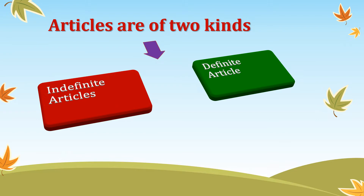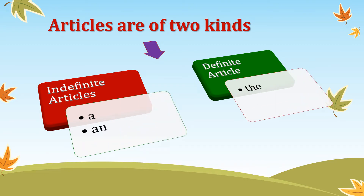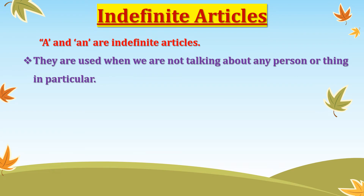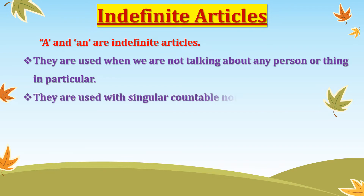Indefinite articles. There are two indefinite articles: A and an. And there's just one definite article: the. A and an are indefinite articles. They are used when we are not talking about any person or thing in particular — that means we use them for general things. They are used with singular countable nouns. So that means they are used for those nouns which are singular and we can count them.